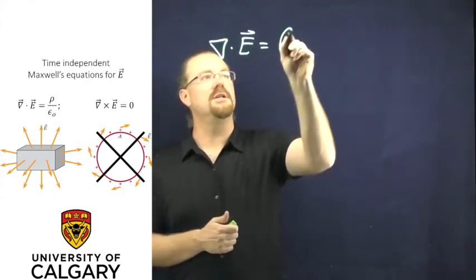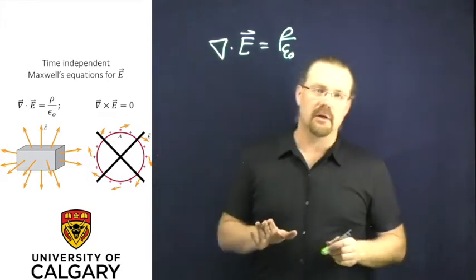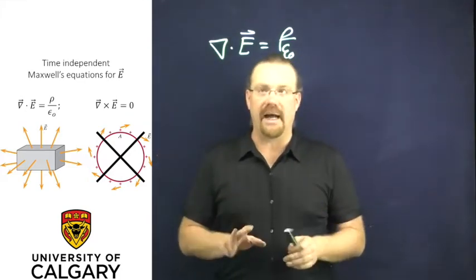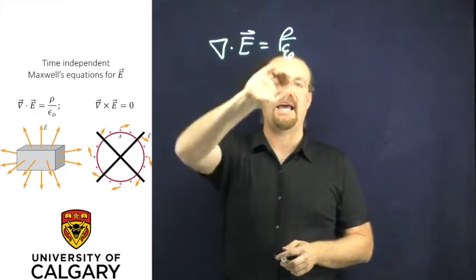Taking a look at Maxwell's equations, the divergence of E is equal to rho over epsilon naught. Now this is true in general, static or not, but we clearly see that our electric fields are the type of fields that have divergence.